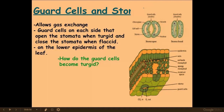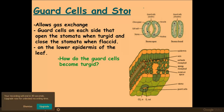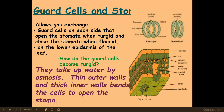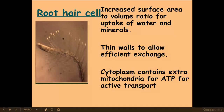Guard cells line the outside of the stomata and cause the stomata — a small hole — to open and close. Guard cells open when water moves in via osmosis, causing turgidity within the cell; water moves into the vacuole and pushes out towards the cell wall. If water moves out of the guard cells by osmosis, the cells become flaccid and the stomata close.